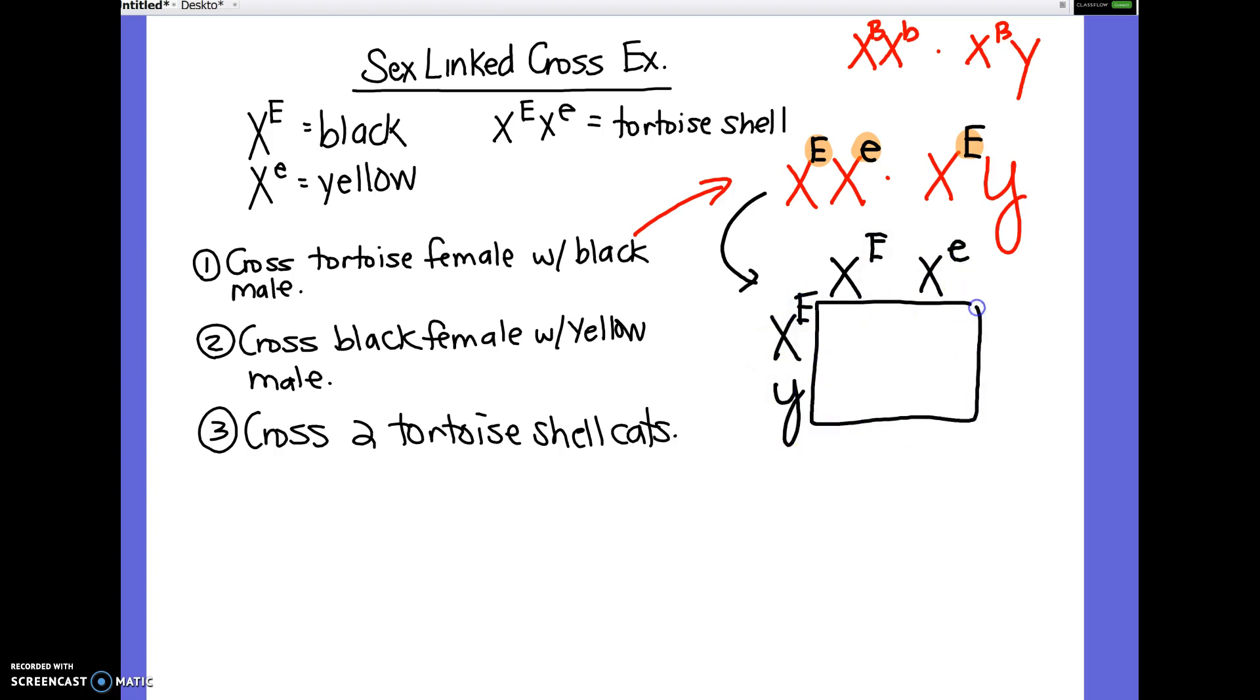These will never have more than four boxes. You don't have to worry about these ginormous Punnett squares in this chapter. So we get X big E, X big E, X big E, X little E, X big E, Y, X little E, Y.